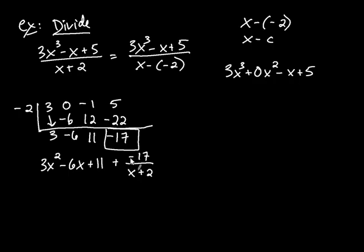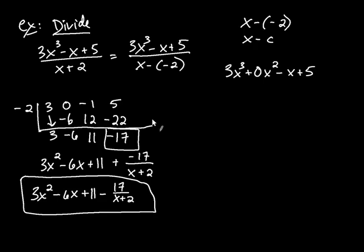Typically, you can take that negative and write it instead of plus negative, people often just write minus. So let me go ahead and write 3x squared minus 6x plus 11, and then minus 17 over x plus 2. So that would be your answer. Synthetic division helped us perform this division really quickly. Now, you might say, well, how do I know that's correct? There are a couple of ways of checking this.